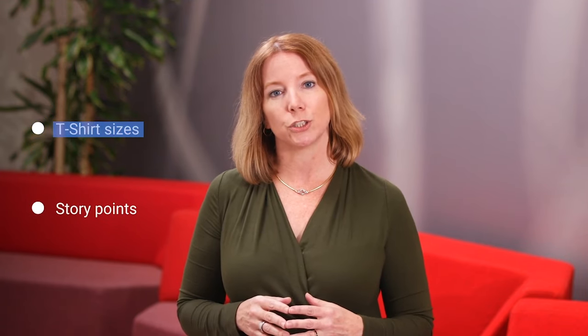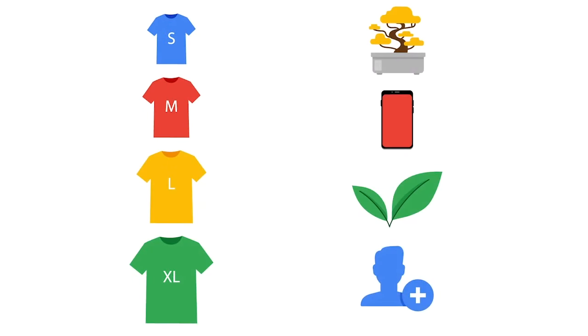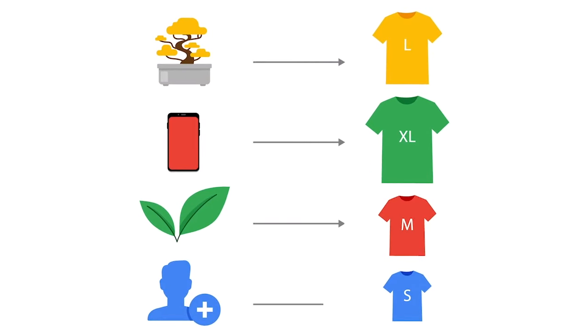There are two common relative estimation methods: t-shirt sizes and story points. With t-shirt sizes, the team picks one backlog item that seems about a medium-sized workload and calls it 'medium.' Then they take another item, compare it to the medium, and ask: 'If that first item was a medium, what size would I give this one?' They repeat this for each item on the backlog. For example, with four Virtual Verde backlog items — adding bonsai trees, creating a mobile app, launching a new logo, and creating a new account page — the team decides launching a new logo is their medium and compares the rest to it.